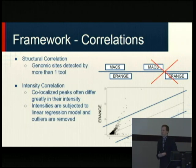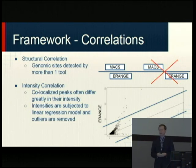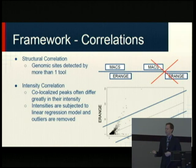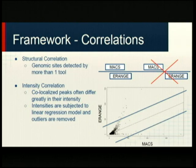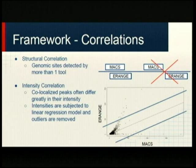We also wanted to correlate peaks by intensity, since structural overlap alone has been done before. Here I plotted the intensities associated with predictions for co-located peaks — each dot is a site discovered by both erange and MACS. You can see a list of peaks with very low intensities predicted by one tool but rather high intensities by another, meaning these peaks differ significantly. So we allow the user to add another layer of correlation and remove peaks that aren't consistent based on intensity level.